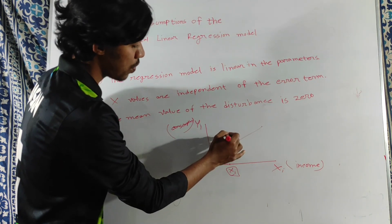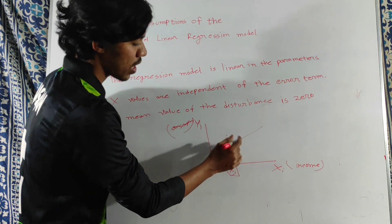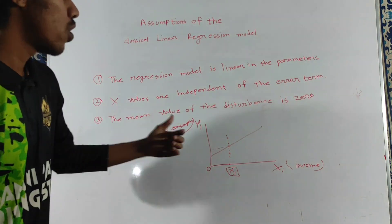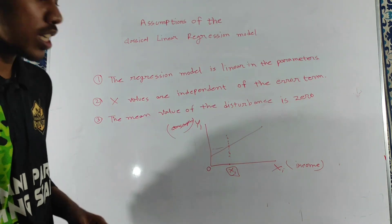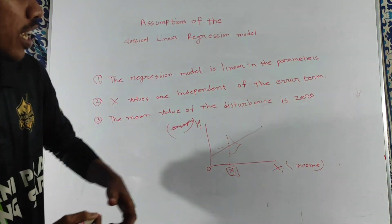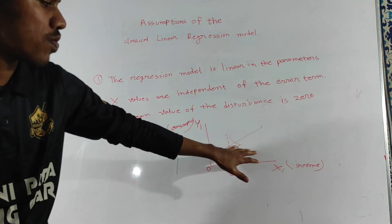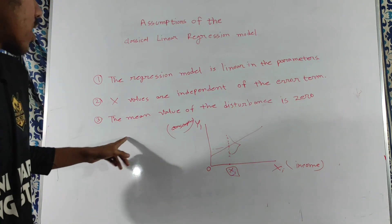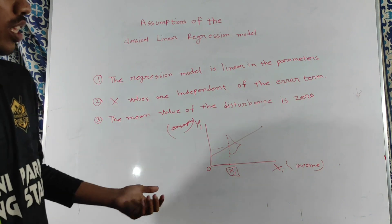There will be some unexpected value in this problem, but the mean would be zero. So the mean value, or the expected value, of the residual will be zero.